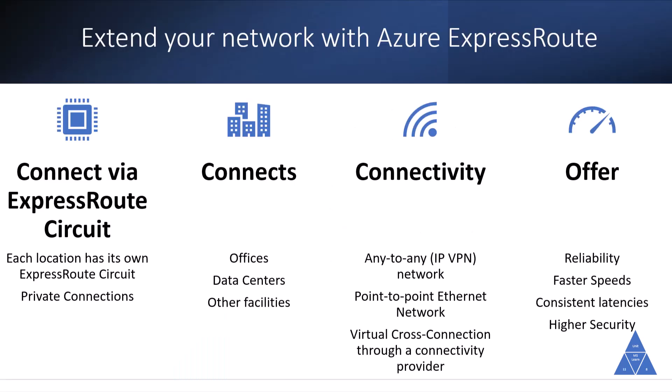Azure ExpressRoute lets you extend your on-premises network into Microsoft Cloud over a private connection with the help of a connectivity provider. This connection is called an ExpressRoute circuit. With ExpressRoute, you can connect to Microsoft Cloud services like Microsoft Azure and Microsoft 365. Azure ExpressRoute connects offices, data centers, and other facilities to the Microsoft Cloud, and each location would have its own ExpressRoute circuit.